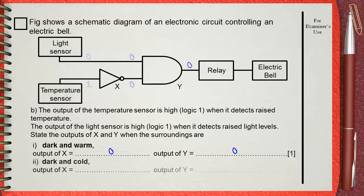The second case, which is dark and cold. Dark means zero for the light sensor, cold means zero for the temperature sensor. The zero of the temperature sensor will be inverted to 1 by the NOT gate X.